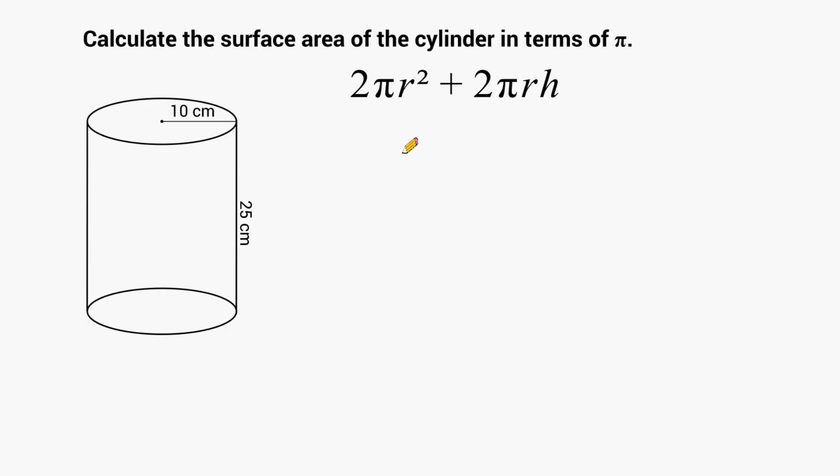Now, this equation is really broken into two main parts. This part of our equation will allow us to find the area of the two circular surfaces, and this part of our formula will allow us to figure out what the lateral area is of our cylinder. Remember, the lateral area just means the side of the shape.